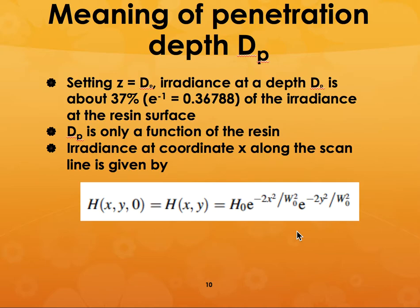If you know your irradiance, you can determine the cure depth. The depth z is typically a function of the resin itself. At any given coordinate x along the scan line, it is given by a complicated expression — but all these things are taken into account by the machine's software. You typically don't have to worry about these calculations; they have already been optimized. You just input the relevant information and the machine automatically accounts for everything.